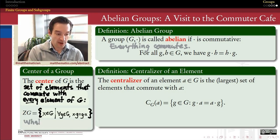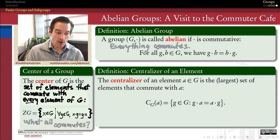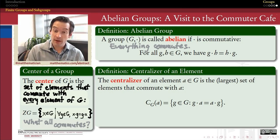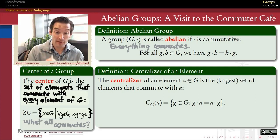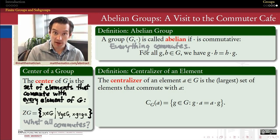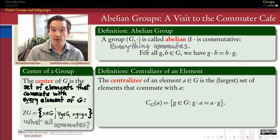The center of a group is asking: what all commutes with everything? If everything in the whole group doesn't commute with everything, what does commute with everything? That potentially smaller subset of elements — which turns out to be a subgroup — is called the center.